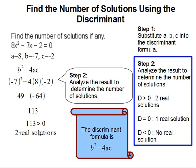Now 113 is greater than 0, so you have two real solutions. And for this quadratic equation, 8x squared minus 7x minus 2, you get two real solutions. And this completes our problem.